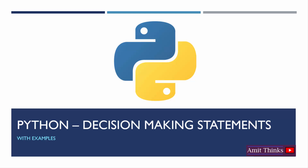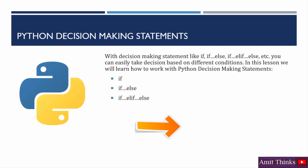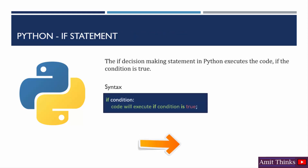In this video, we will learn about decision making statements in Python. With decision making statements, you can easily take decisions based on different conditions. In Python, we have if, if-else, and if-elif-else, so that you can easily take decisions based on different conditions. We will learn about all these with examples. Let's begin with the first one: the if statement.